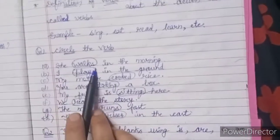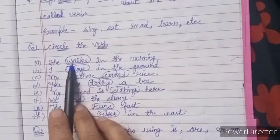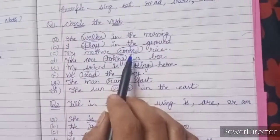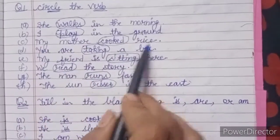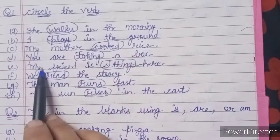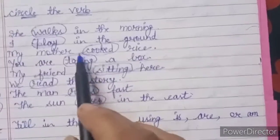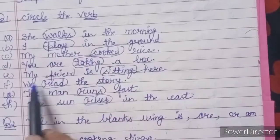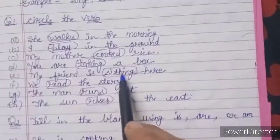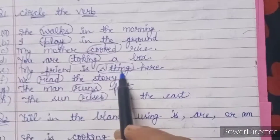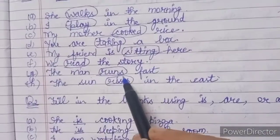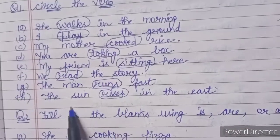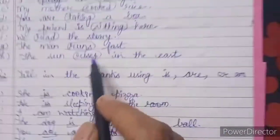So we will practice with some sentences. First: 'She walks in the morning' — so here, what is the verb? Walks. Next: 'I play in the ground' — so circle 'play'. 'My mother cooked rice' — what is the verb here? Cooked. 'You are taking a box' — what is the verb? Taking. 'My friend is sitting here' — verb: sitting. Next: 'We read the story' — circle 'read'. 'The man runs fast' — circle 'run'. 'The sun rises in the east' — so here we get the verb 'rises'.